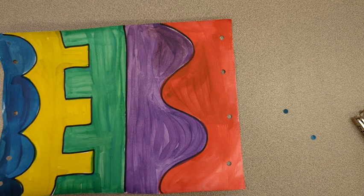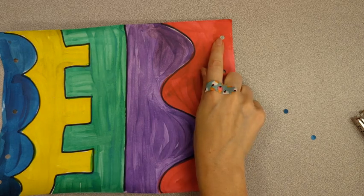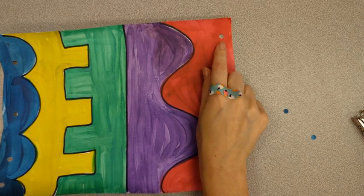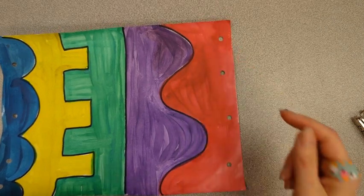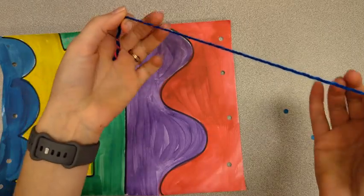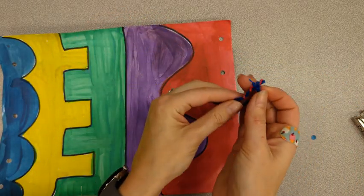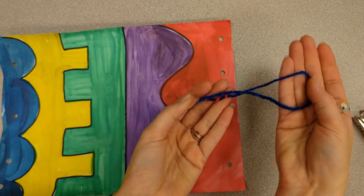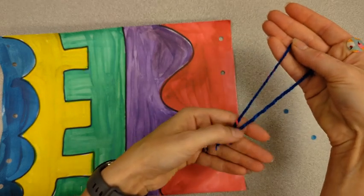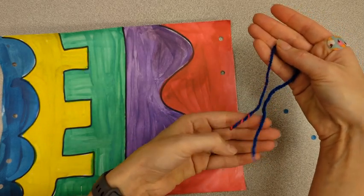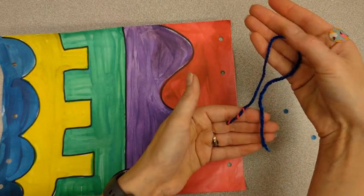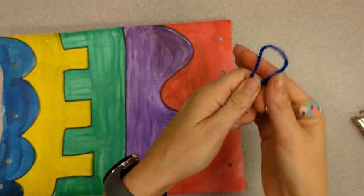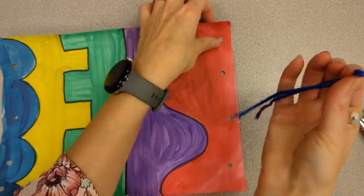So now we are going to add the string to the end of our paper. What I want you to do is you're going to take your string and you're going to fold it in half. Now it looks like a little guy - he has a head and he has two legs, one, two. Now he's going to dive into the hole.